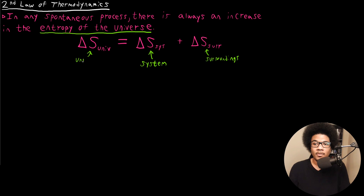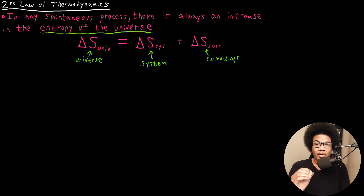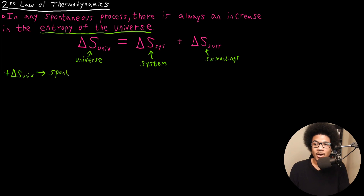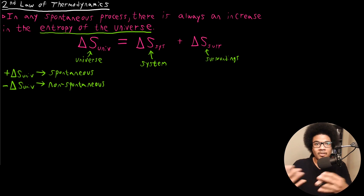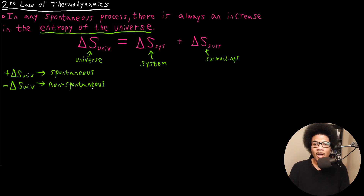What the second law of thermodynamics basically says is that a positive change in the entropy of the universe corresponds to a spontaneous process, whereas a decrease in the entropy of the universe corresponds to a non-spontaneous process. Or if it's a process that can be reversed, you can say it's spontaneous in the reverse direction if you have a negative delta S of the universe. So let's see how we can actually identify whether a process is going to be spontaneous or not.